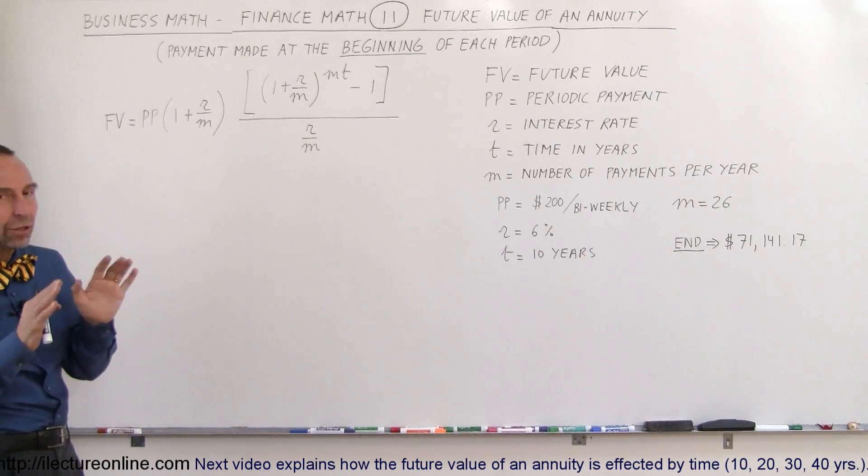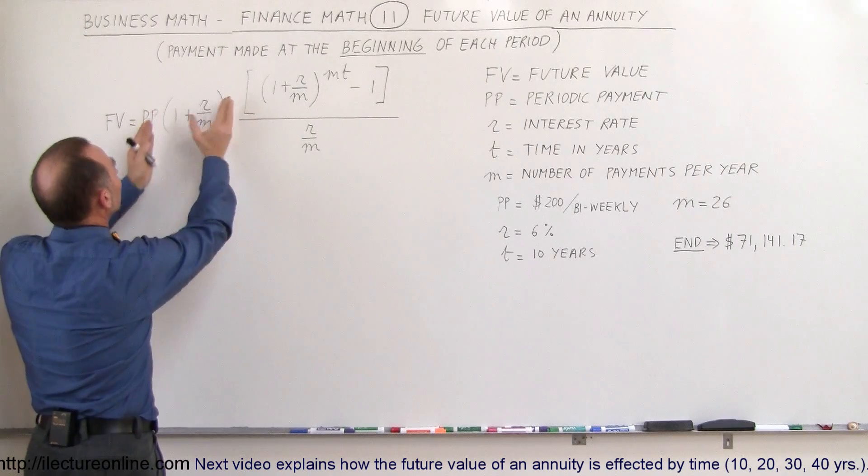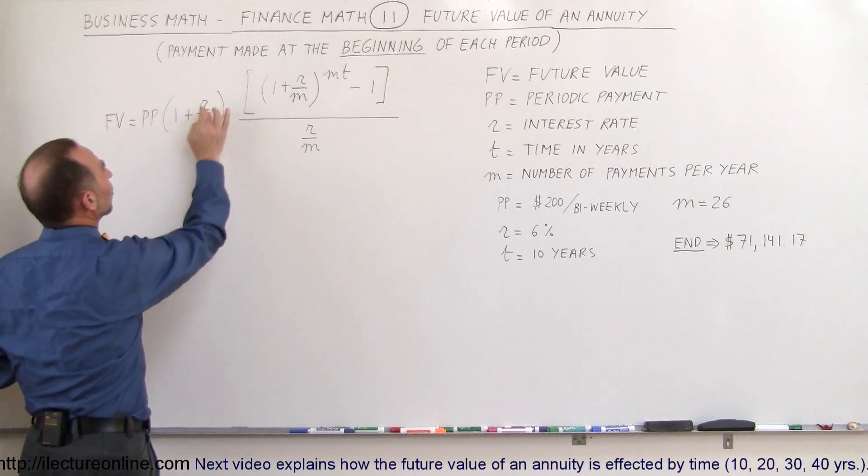The equation looks almost identical to what was before. With the differences, we have to insert this one term right here. We're going to multiply everything by 1 plus R over M.